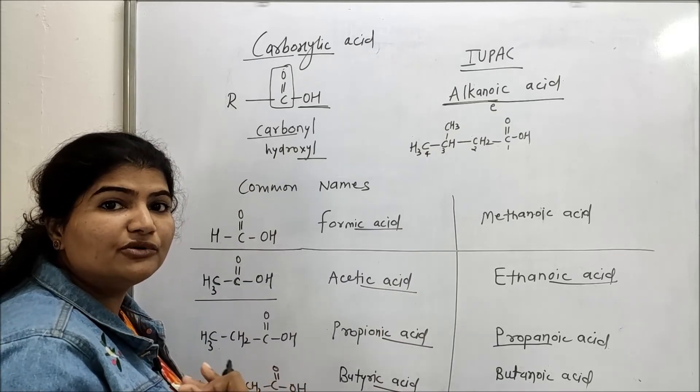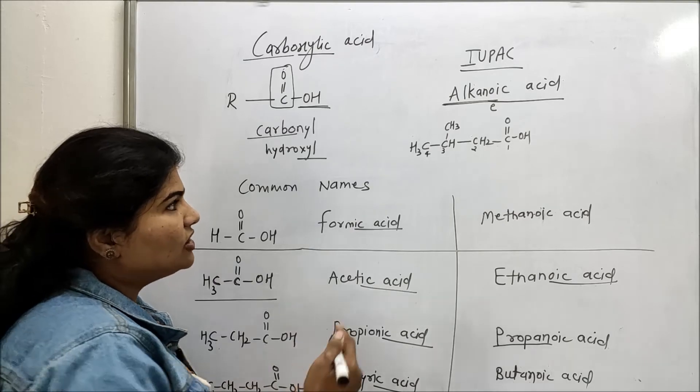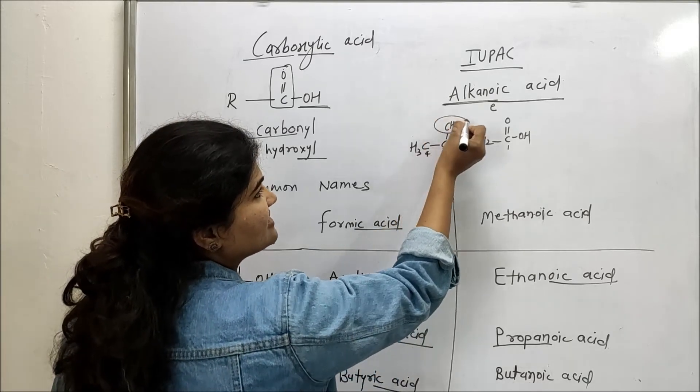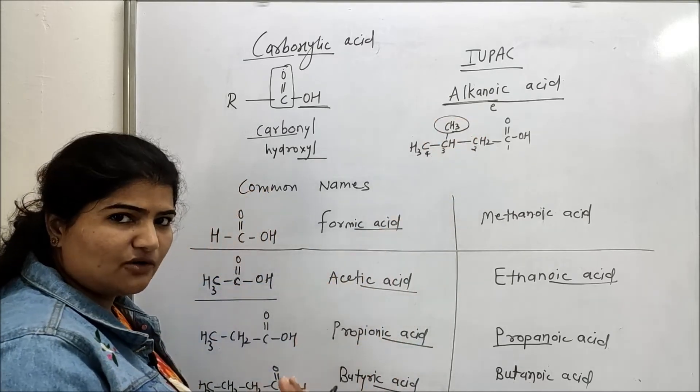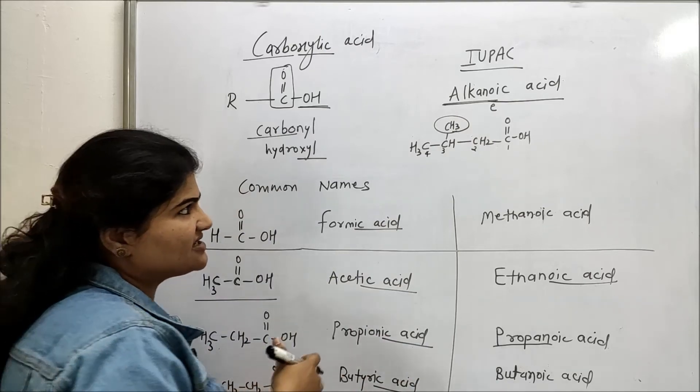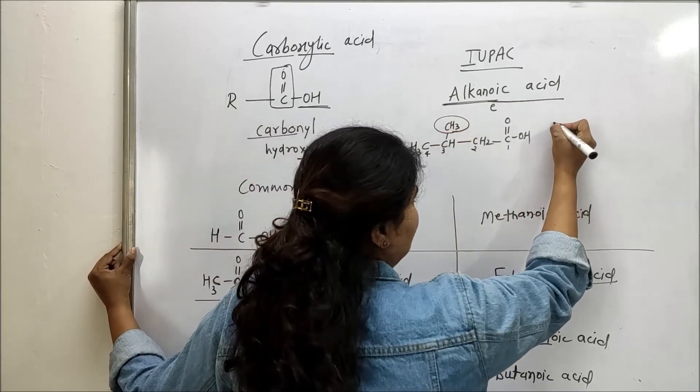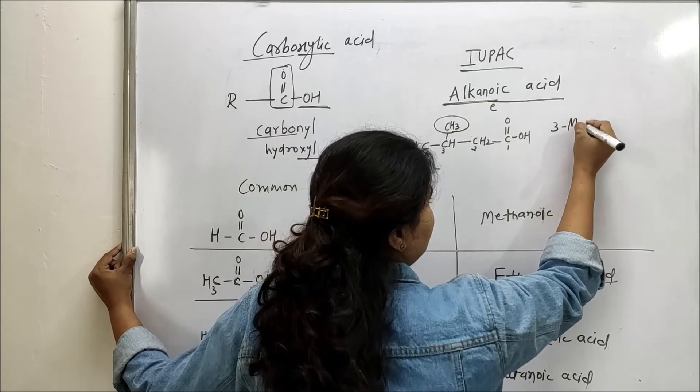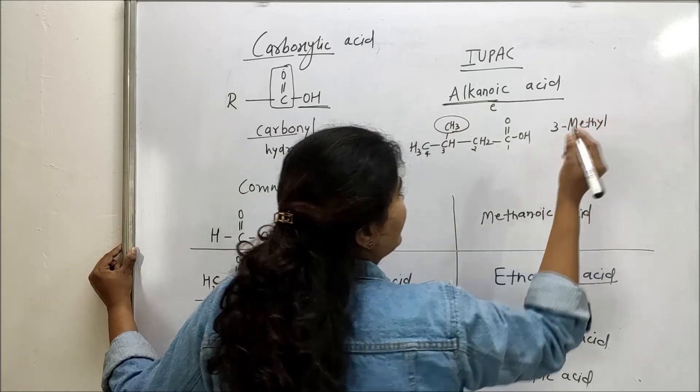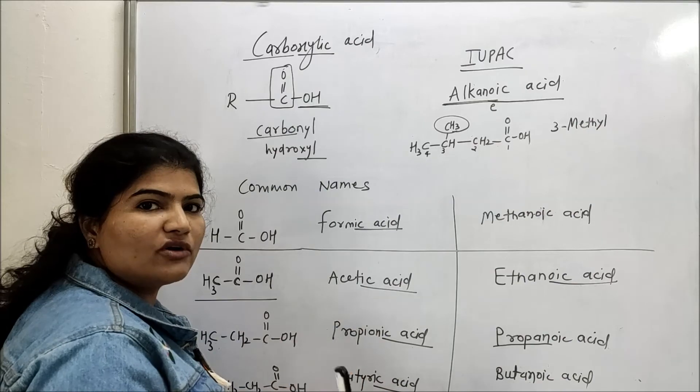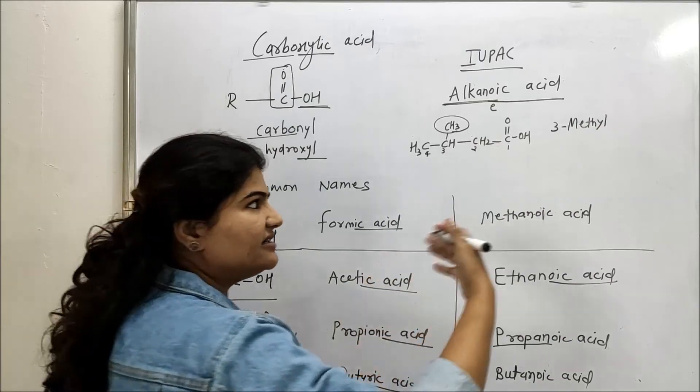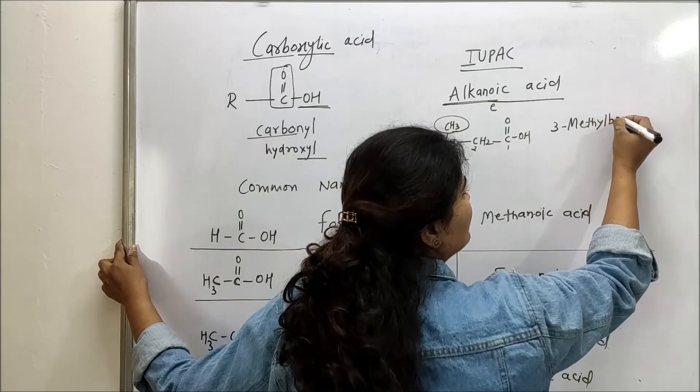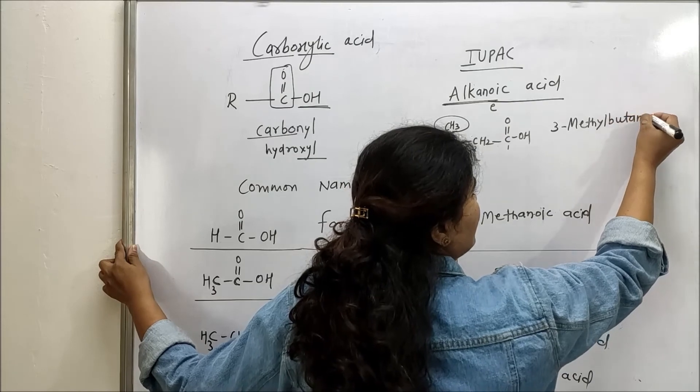Four carbon containing parent alkane is butane. So this is a derivative of butanoic acid. And on third carbon, there is a methyl substitution. And substitutions we always write as prefixes. So how we are going to write? At third, there is methyl. So I will write 3-methyl and then there is four carbon parent butane and it's acid. So it will become 3-methylbutanoic acid.